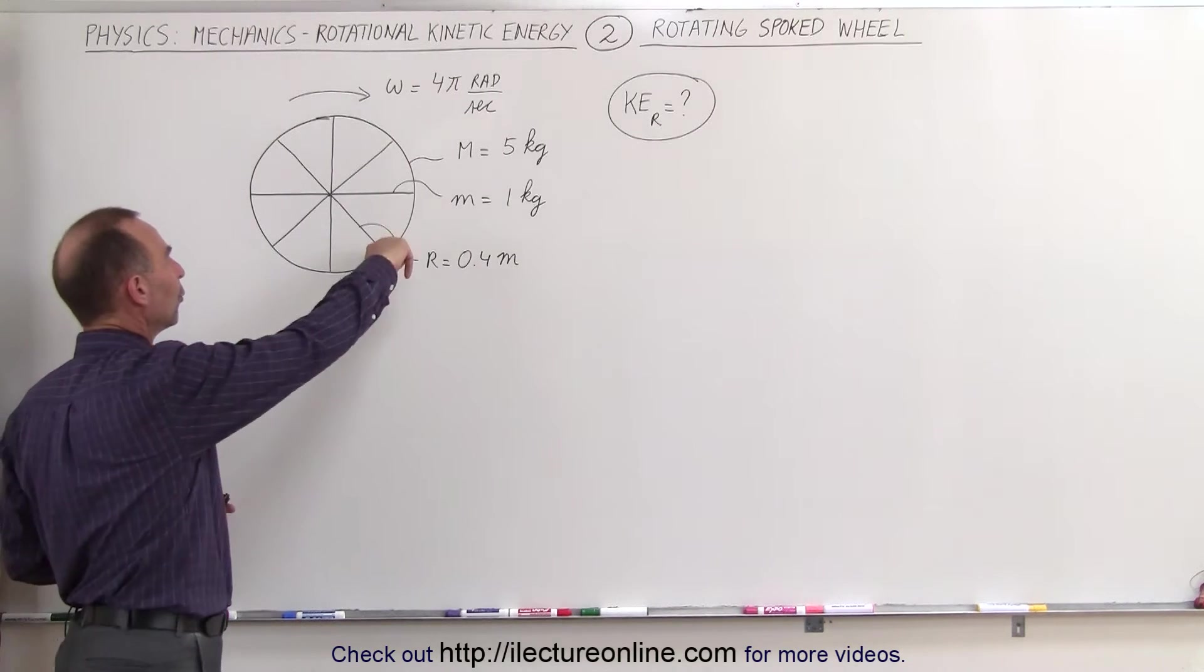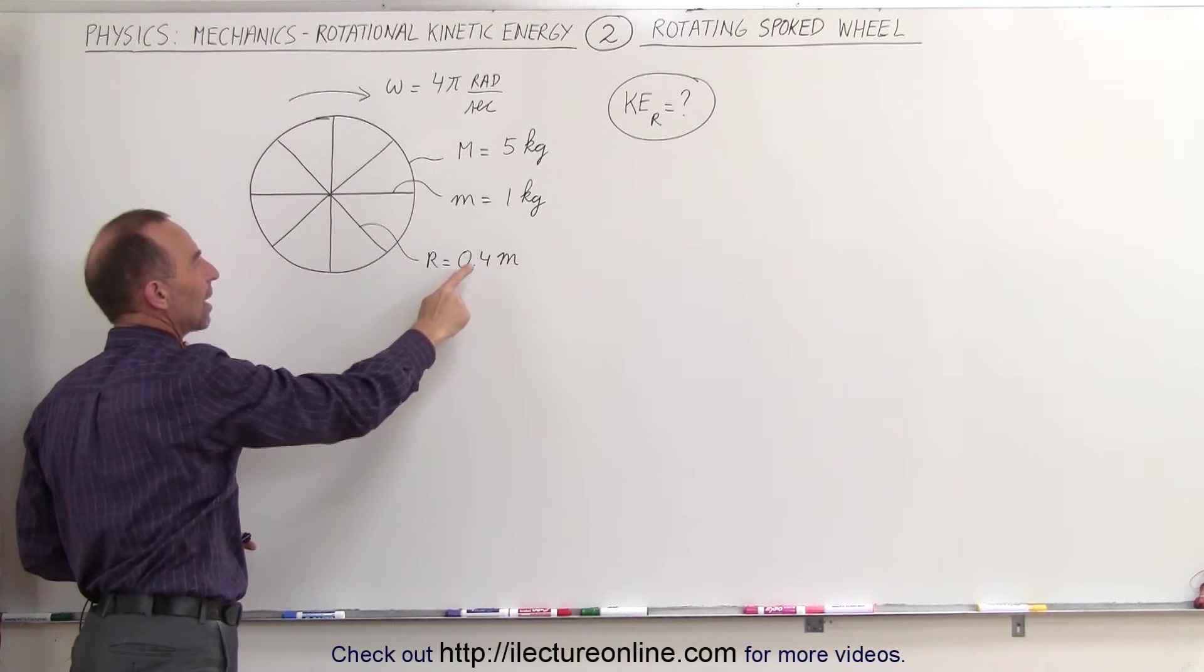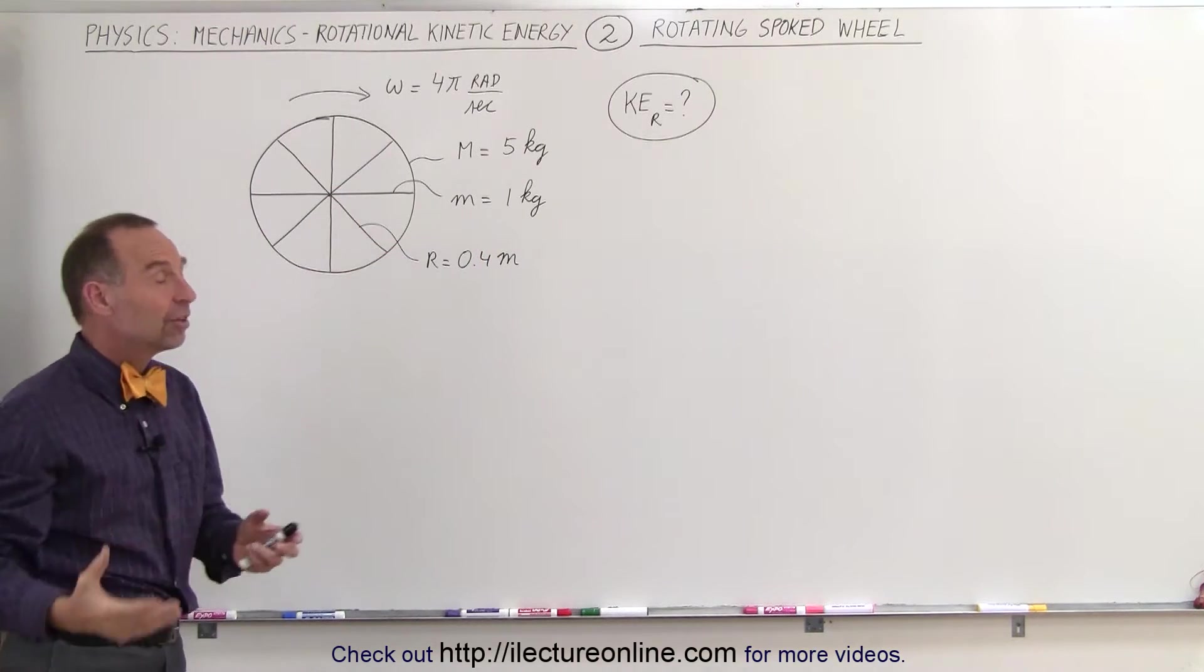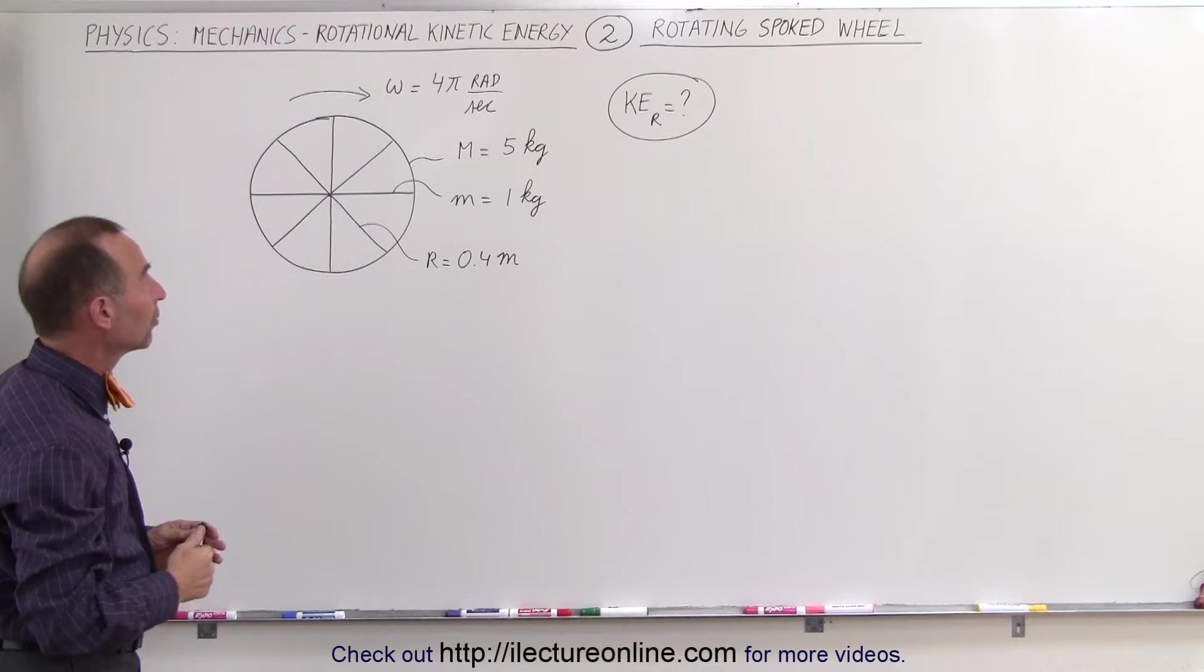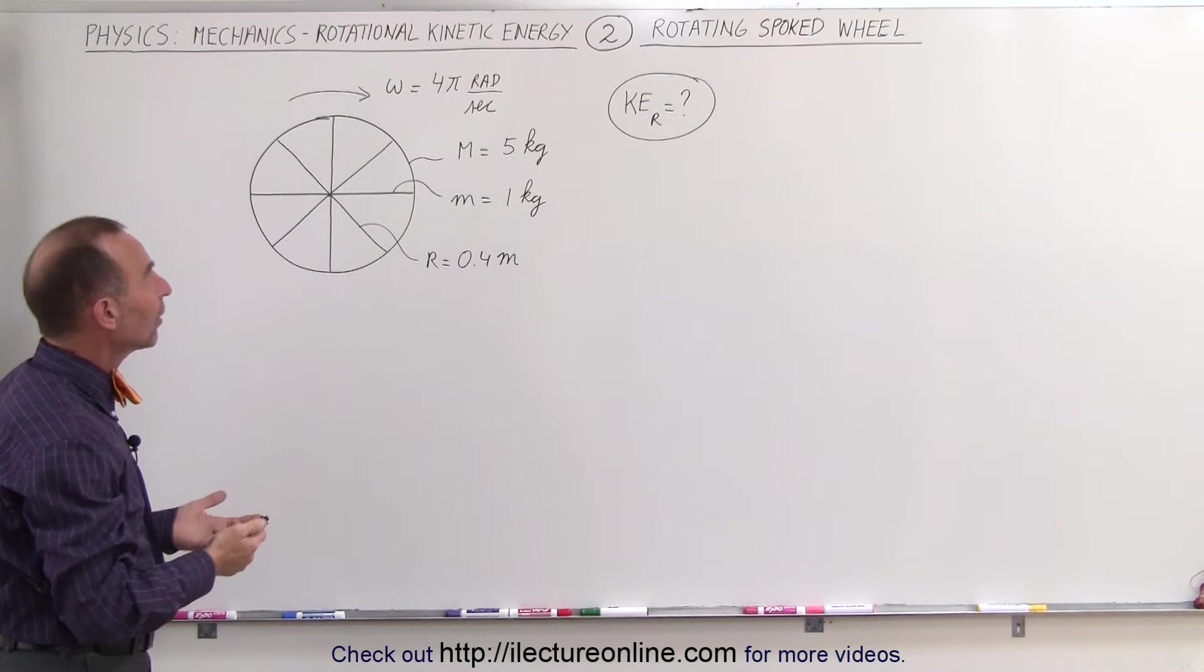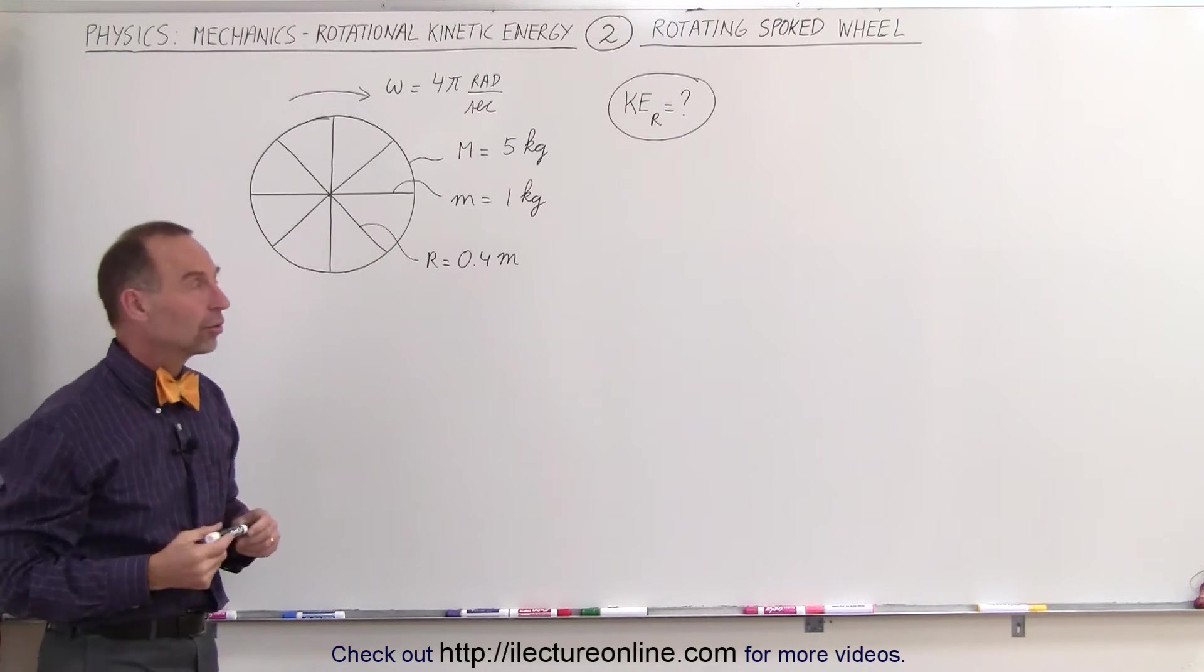Notice that the rim of the wheel has a mass of 5 kilograms, each of the 8 spokes has a mass of 1 kilogram, and the radius of the wheel, which is equal to the length of each spoke, is equal to 0.4 meters. Assuming that the wheel is rotating at an angular velocity of 4π radians per second, let's find the rotational kinetic energy.